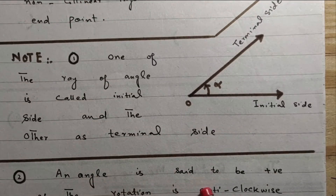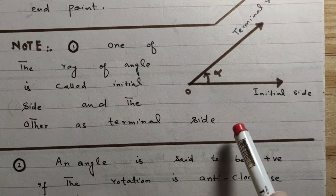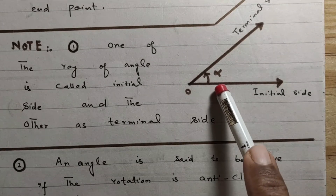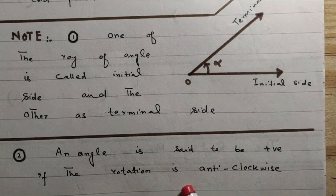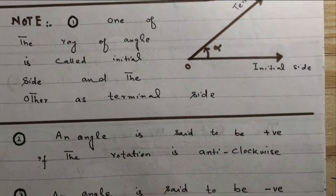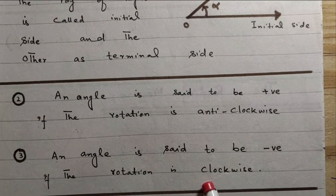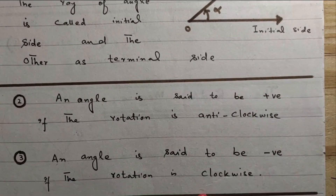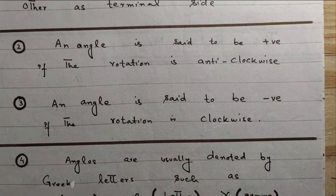An angle is said to be positive if the rotation is anticlockwise. An angle is said to be negative if the rotation is clockwise. Angles are usually denoted by Greek letters such as alpha, beta, gamma, theta, etc.